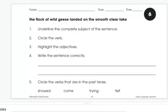Number one, underline the complete subject of the sentence. This one specifically says complete subject, so we want to make sure we do the complete subject.